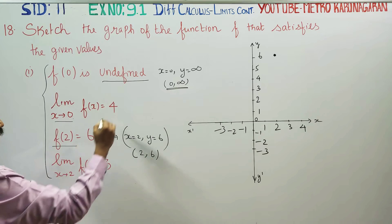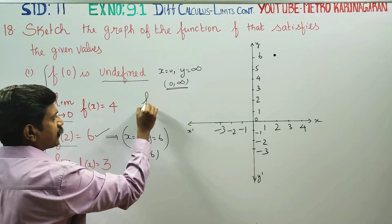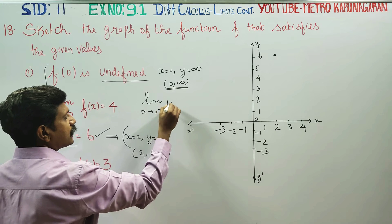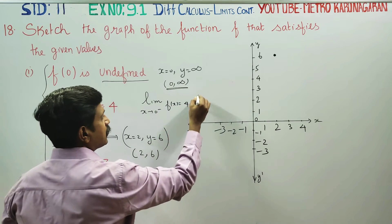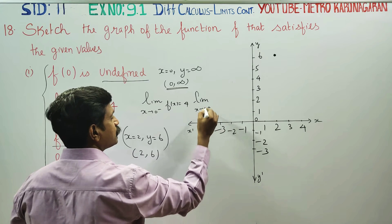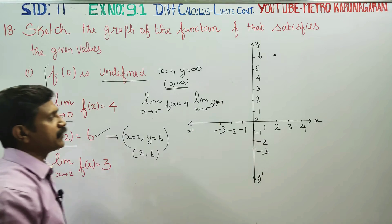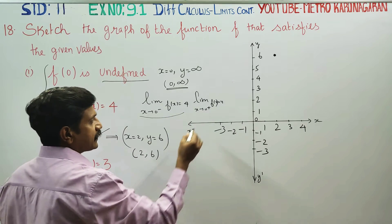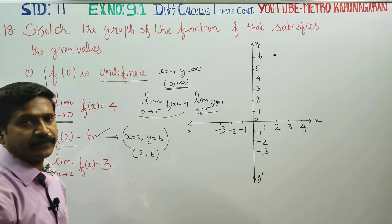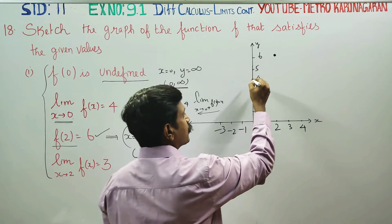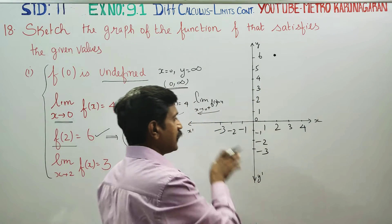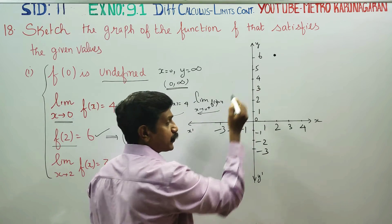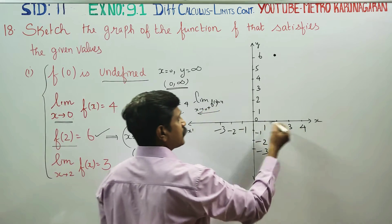When x approaches 0, the limit of f(x) is equal to 4. This means the left-hand limit as x approaches 0 minus equals 4, and the limit as x approaches 0 plus also equals 4. So the left-hand side approach and right-hand side approach both equal 4 — the graph approaches y = 4.